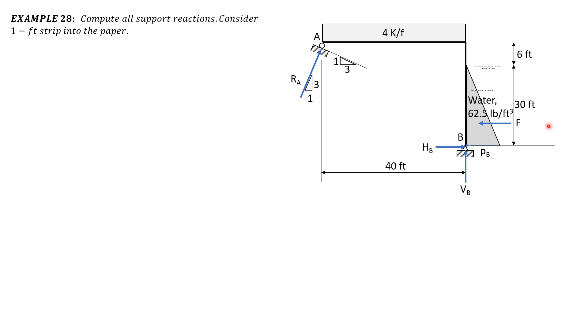And the location of the force, resultant force or the total pressure, F is one third of 30 from the bottom. So 10 feet and 20 feet from the top water surface. So pressure B is 62.5 times 30, so 1875 pounds per square foot. Then F is the area or volume of the pressure diagram. So one half of PB times 30 times perpendicular to the board, one foot as stated here.